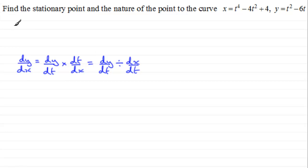So let's get dx by dt first of all. dx by dt is going to equal, in the usual way if we differentiate this, 4t cubed minus 8t, and the 4 goes to 0.